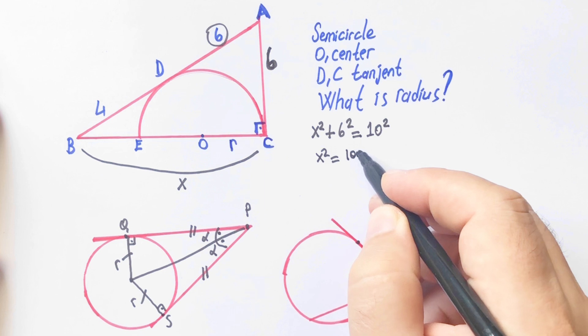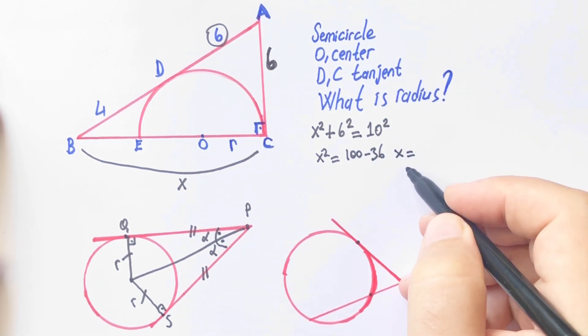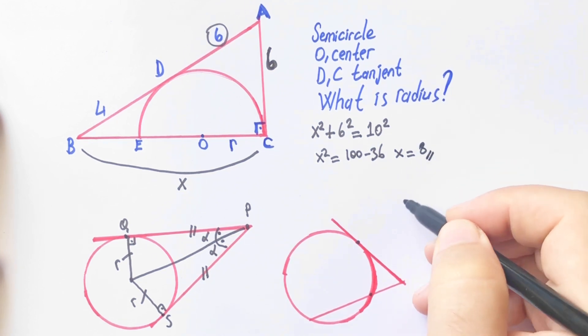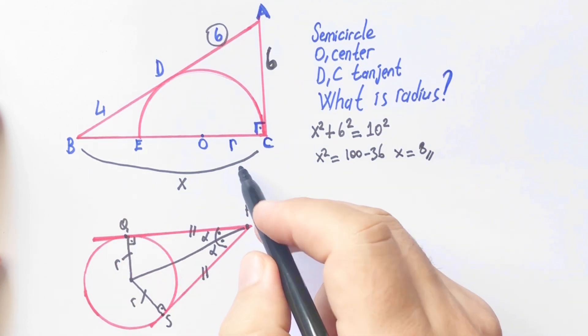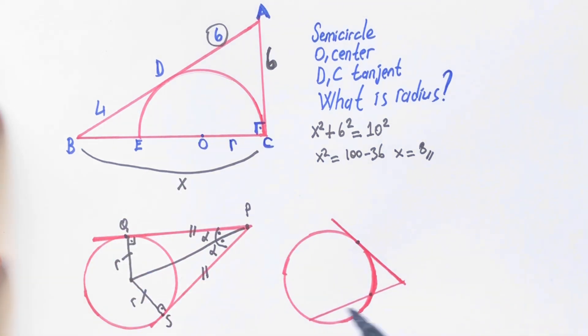So you find x equals 8 units. So this length is 8. D is the tangent point. Let's remind you according to the tangent secant theorem, let's call here A, here B, and here C as well.